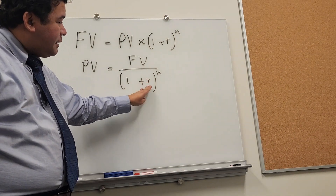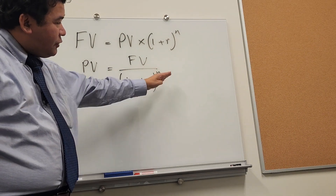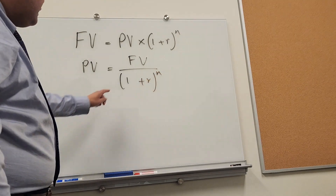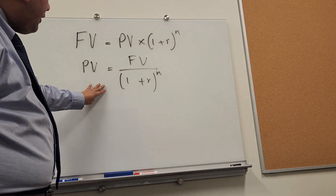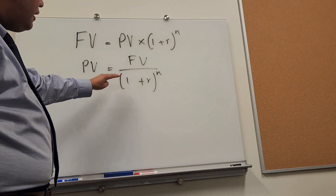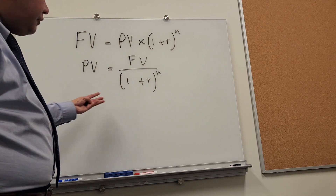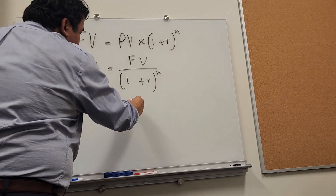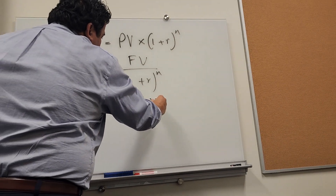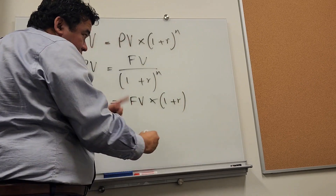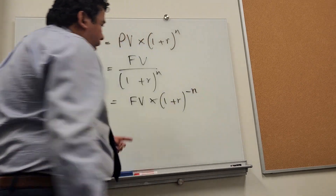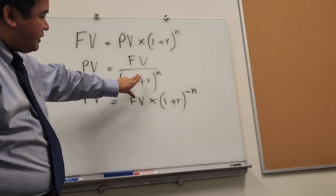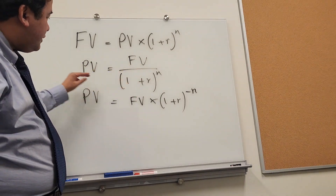If it's 4%, it has to be 4% according to the number of years or number of periods. This is the fraction method. You can also use multiplication for the present value — future value multiplied by 1 plus r raised to the minus n power. These two methods will give identical calculations for the present value.